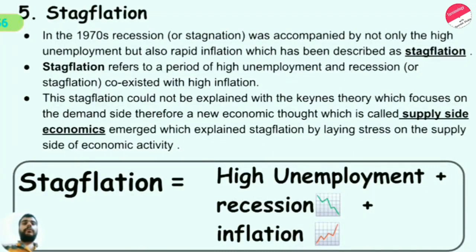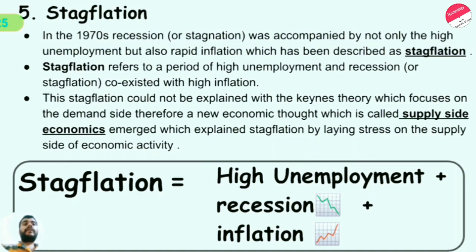We are covering all the topics that concern microeconomics. The fifth topic is stagflation. In the 1970s, recession or stagnation was accompanied by not only high unemployment, but also rapid inflation, which has been described as stagflation. Stagflation refers to a period where high unemployment and recession co-existed with high inflation.